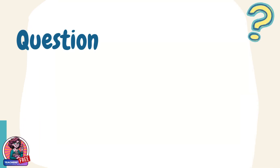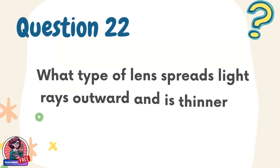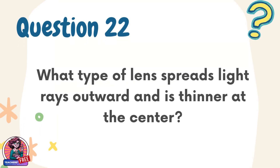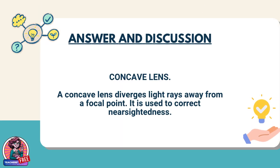Question 22. What type of lens spreads light rays outward and is thinner at the center? Answer: concave lens. A concave lens diverges light rays away from a focal point. It is used to correct nearsightedness.